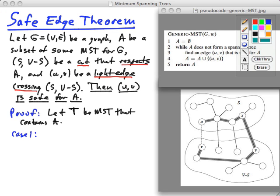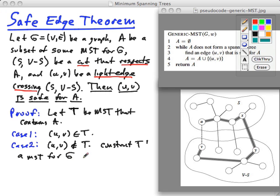So, now we've got two cases to consider here. The first case is where this edge, (u,v), is in T. Then we're done. Because by adding that edge, of course, A is still a subset of some MST. So, we're worried about case two, where this is not true. So, we're going to show that we can construct a tree T prime, an MST for G that contains A with the edge added. And that's where we go to our picture here.